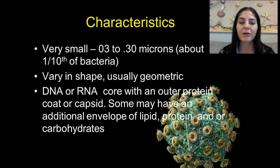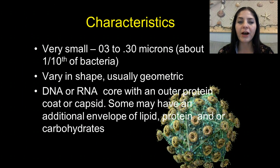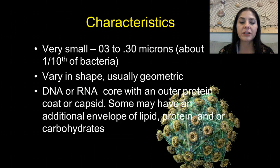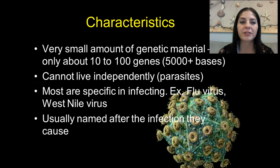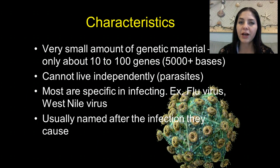Viruses vary in shape but usually occur in geometric shapes. They either have a DNA or RNA core with an outer protein coat or capsid. Some may have an additional envelope of lipid, protein, or carbohydrates. They have a very small amount of genetic material — only about 10 to 100 genes, which is very small compared to other cells — and they only have about 5,000 bases.